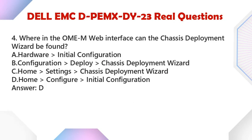Question 4: Where in the OMEM web interface can the chassis deployment wizard be found? A. Hardware, Initial Configuration. B. Configuration, Deploy, Chassis Deployment Wizard. C. Home, Settings, Chassis Deployment Wizard. D. Home, Configure, Initial Configuration. Answer: D.